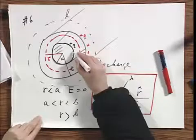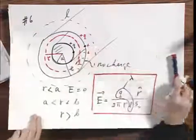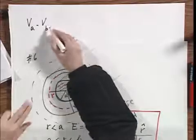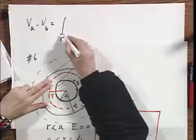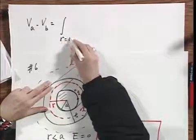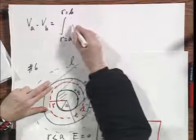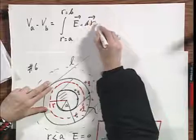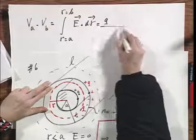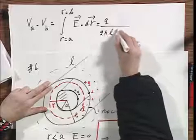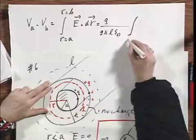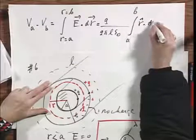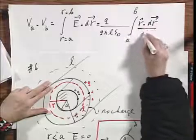What is now the potential difference between this point and this point, between the two cylinders? And I will just write that down, the same shorthand notation as VA minus VB, which is the integral in going from R equals A to R equals B of E in the cavity dot dr.